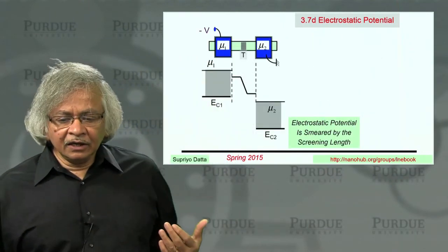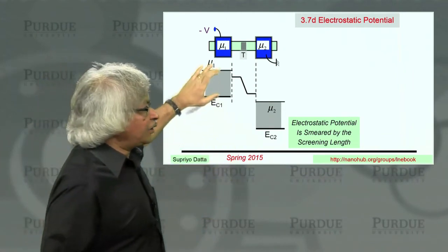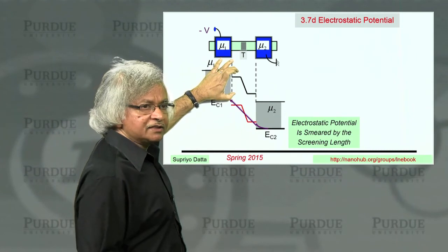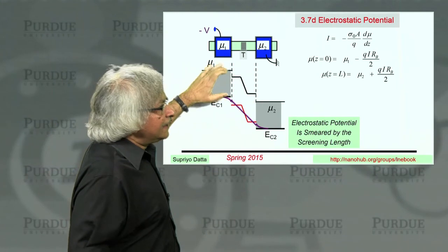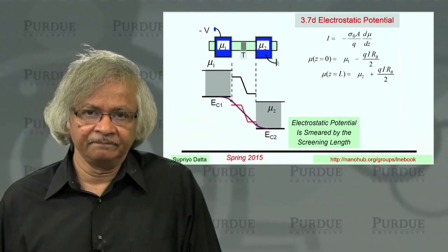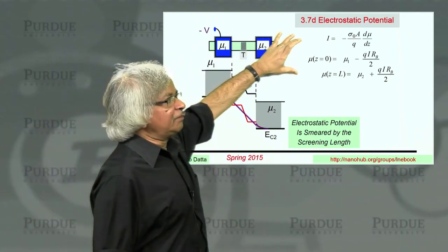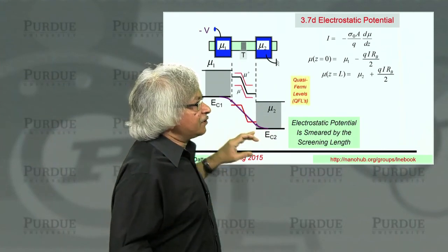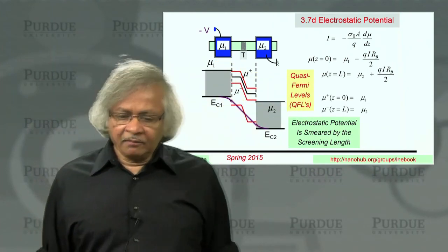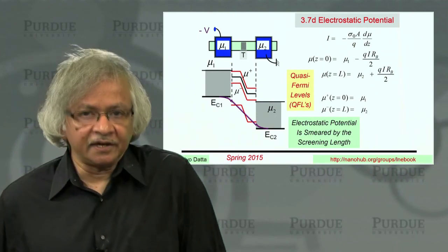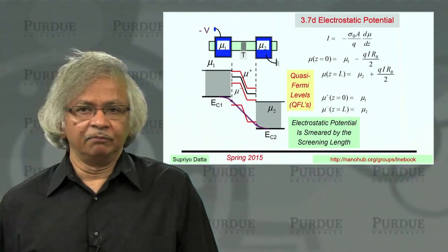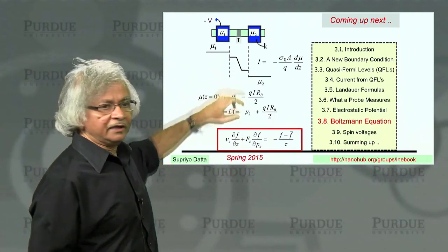So why do we prefer the electrochemical potential over the electrostatic potential? Because while the electrostatic potential seems simpler, it loses important information due to screening. The electrochemical potential, though it requires additional concepts — such as quasi-Fermi levels and careful boundary conditions — gives much more physical insight. What we'll do in the next lecture is provide the proper justification for these concepts through the Boltzmann equation. Thank you.